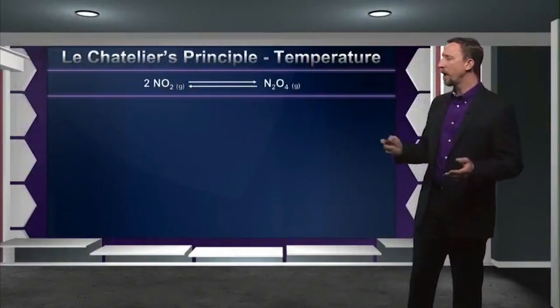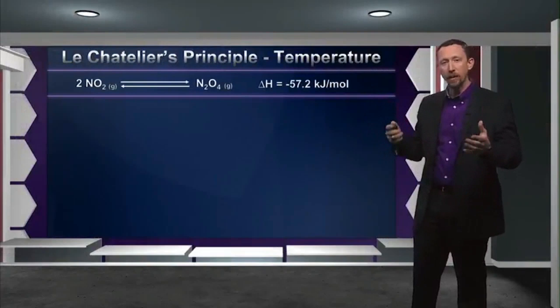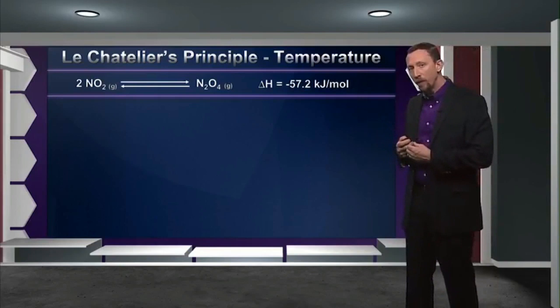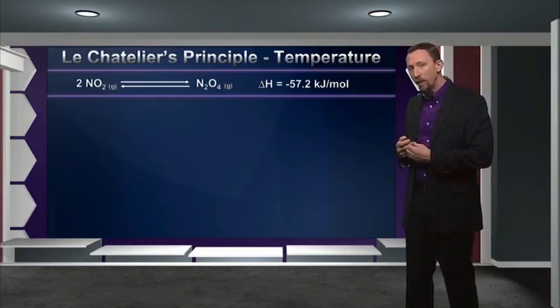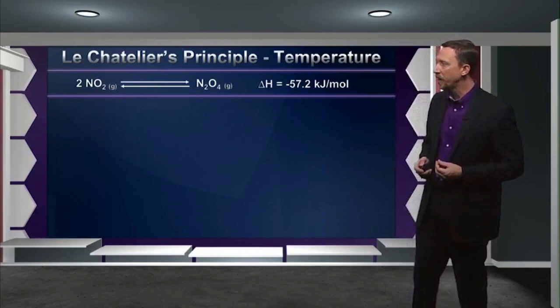Let's go back to our reaction of NO2 and N2O4 and think about how it interplays with heat. This reaction, as I've written it, is an exothermic process. The conversion of two moles of NO2 into a mole of N2O4 releases 57.2 kJ per mole of heat. That means I can think of heat as though it were a product of that reaction — instead of showing the enthalpy separately, let me think of it as a reaction where heat is a product. That gets us more in line with thinking about Le Chatelier's principle.